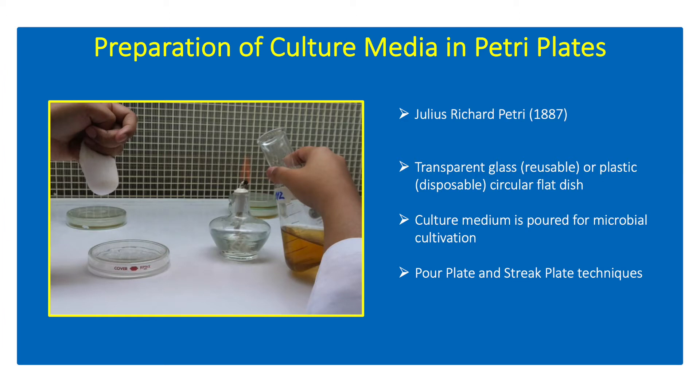Petri plates are used by microbiologists to isolate and quantify microorganisms. Petri plates are reusable transparent glass or disposable plastic dishes where a culture medium is poured for microbial cultivation. Pour plate and streak plate techniques are performed using a petri plate to isolate and purify bacterial or fungal colonies.